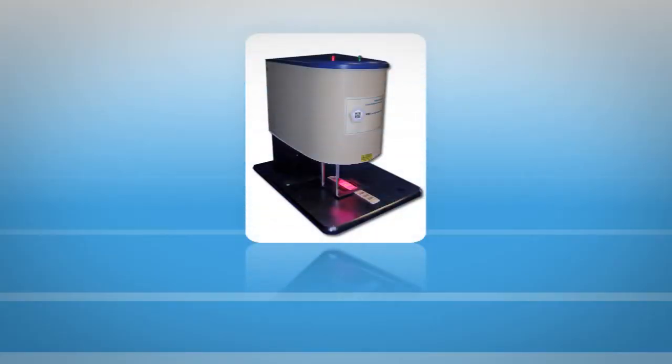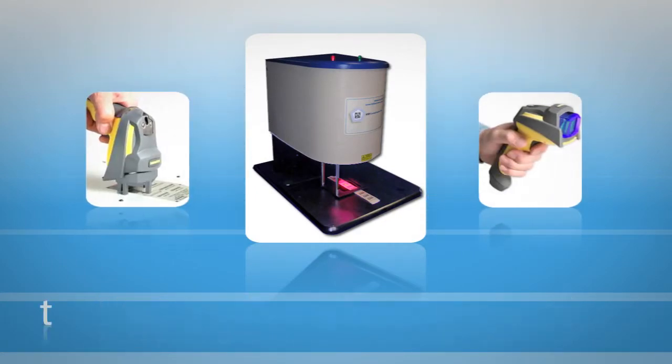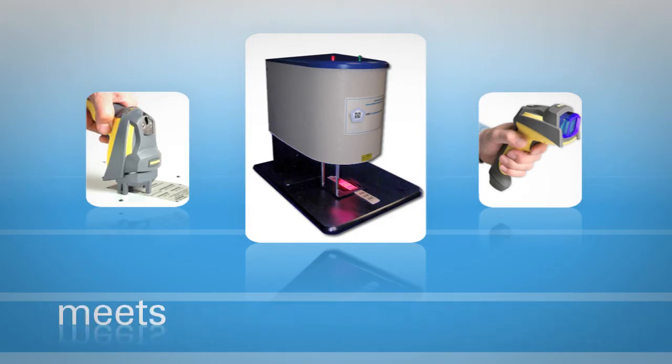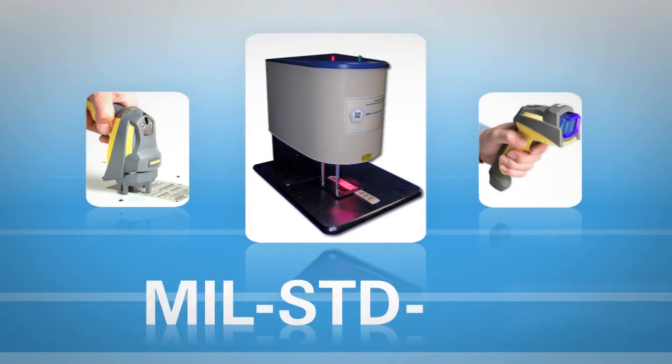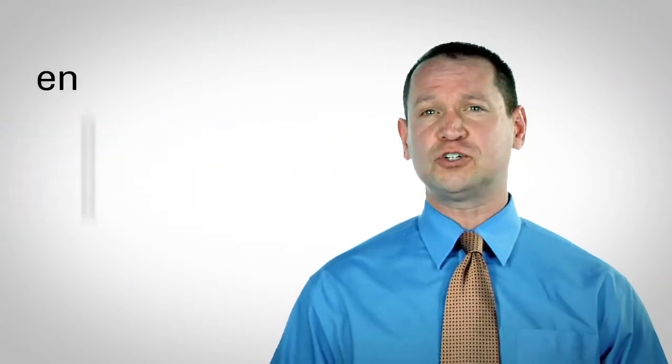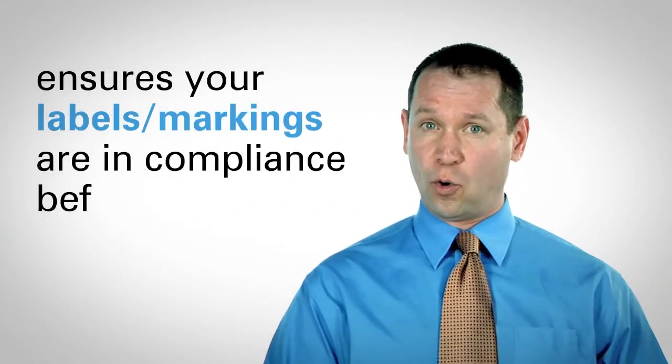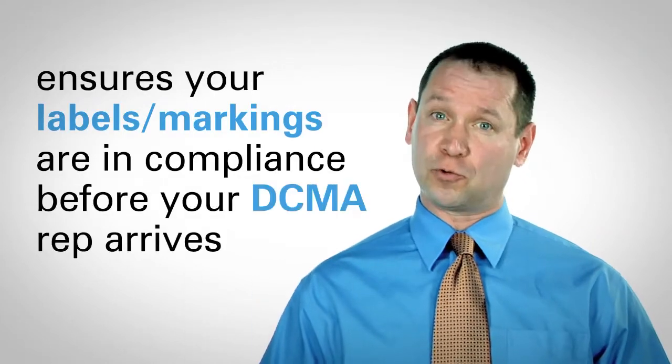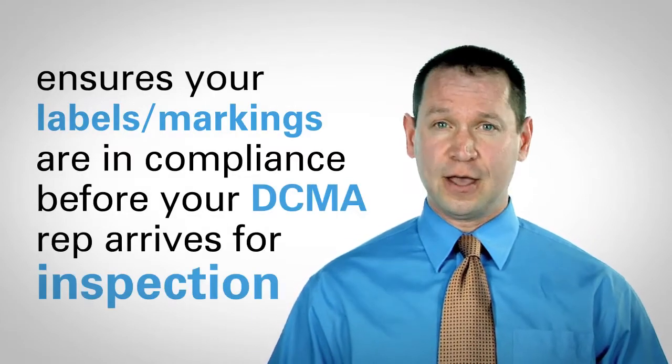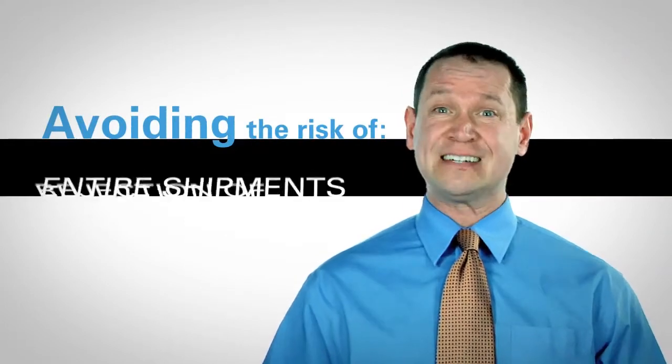Regardless of marking technology, the UID mark must be verified to ensure that the data structure meets the standard defined by Mill Standard 130. This verification process ensures that your labels and markings are in compliance before your DCMA rep arrives for inspection, avoiding the risk of costly delays or rejection of entire shipments.